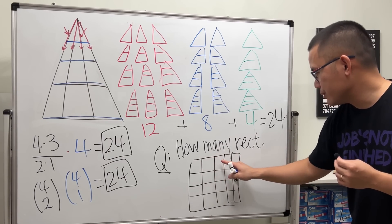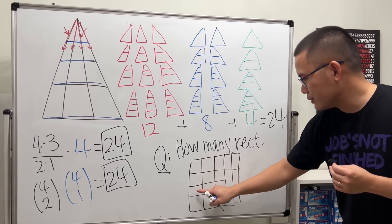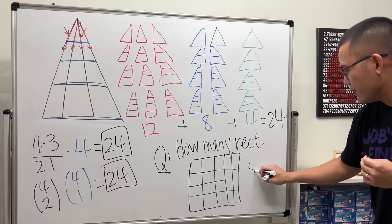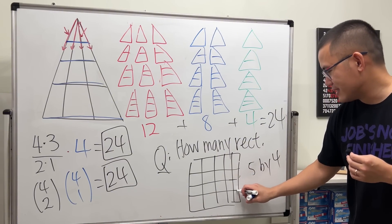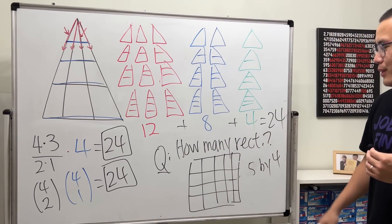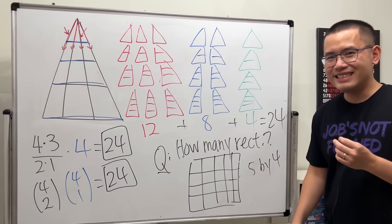Let's see: one, two, three, four, five; one, two, three, four. This is a five by four grid like this. So how many rectangles are we going to have? Leave an answer down below and let me know. That's it!